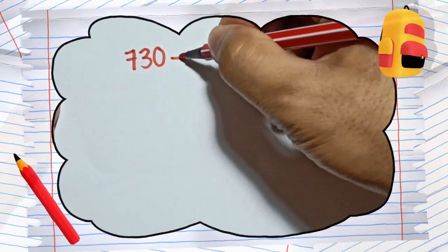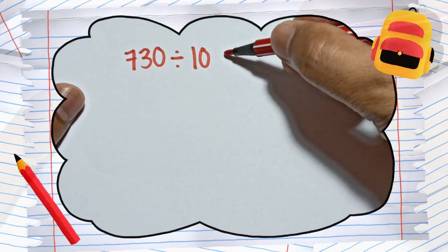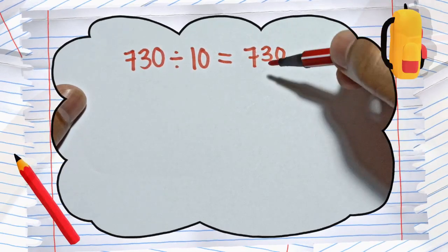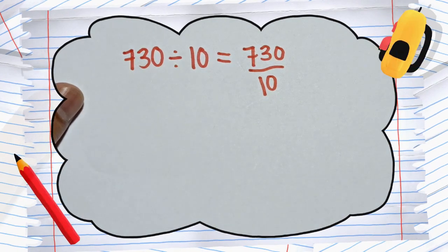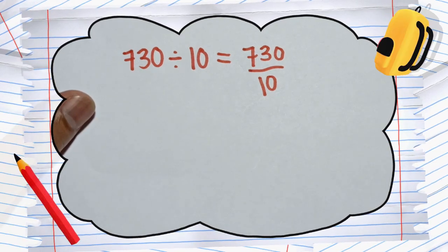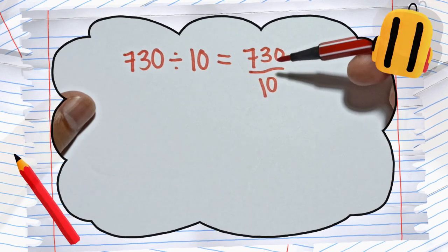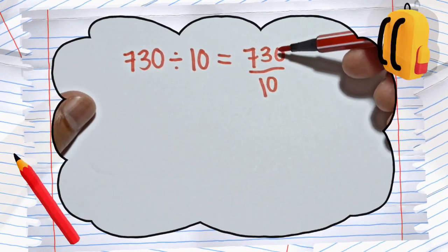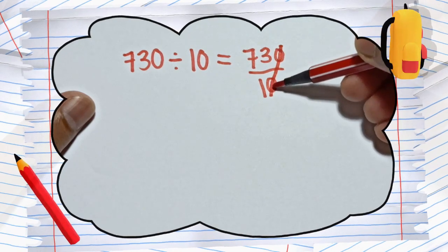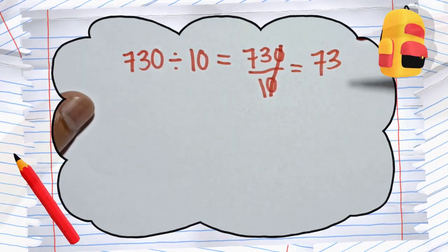Let's say if you have 730 divided by 10. We can also rewrite this as 730 over 10 — different form but the same meaning. First method: if you are dividing a whole number by 10 and it ends in zero, you can simply cut that zero. One zero on top and one zero on the bottom, so the answer becomes 73 divided by 1, which is 73. That's the shortcut technique.